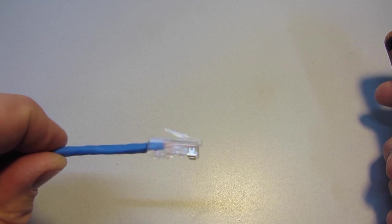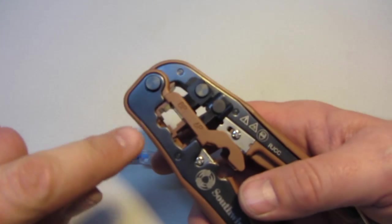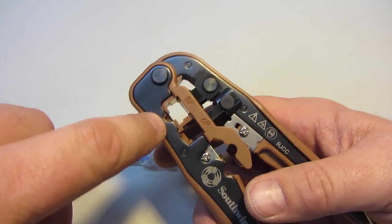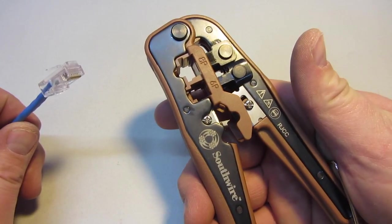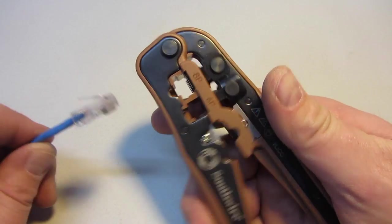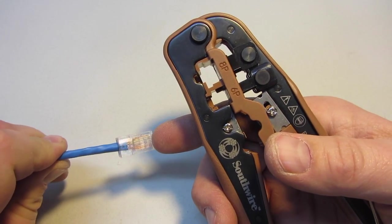I will now take this, and I will put it into the designated spot on the crimping tool. I will simply squeeze the handles together, and it will crimp all the wires into place.